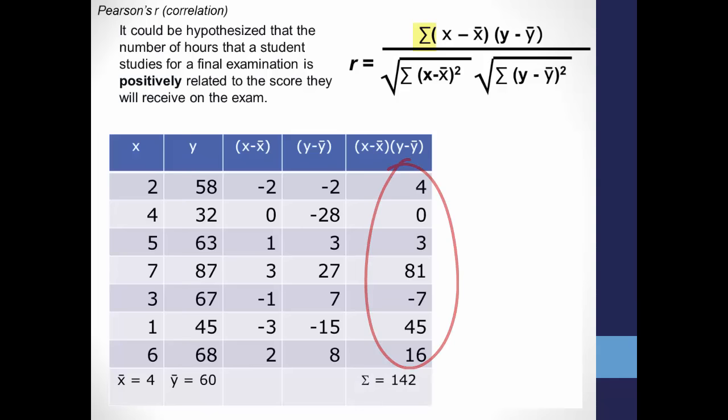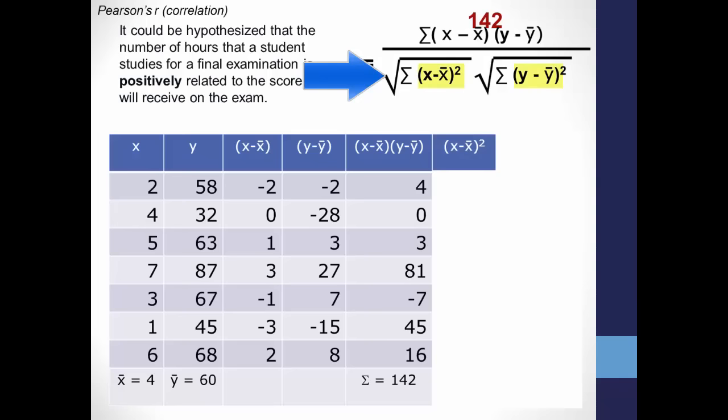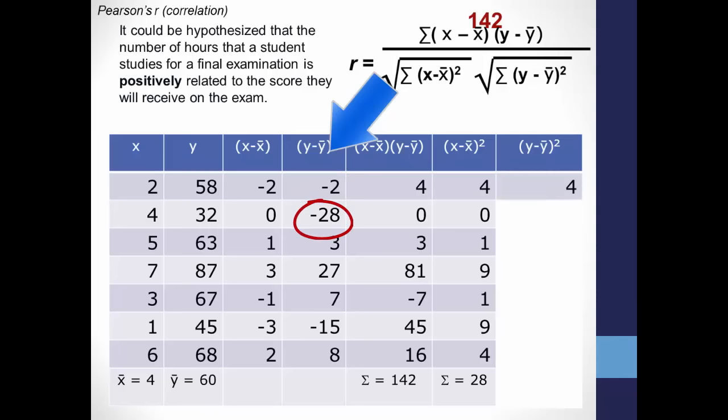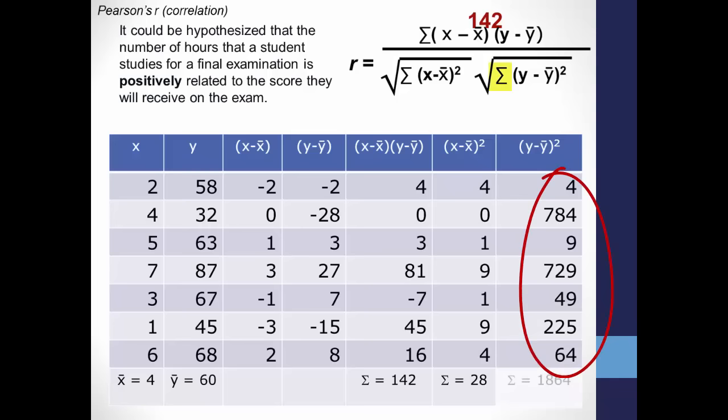142 is what goes into the numerator of this formula. Now onto the denominator, which tells you to square the result of each score minus the group mean. Negative 2 squared is 4. 0 squared is 0, and so on for the rest of the x scores. Sigma tells you to add all of these numbers together, giving us 28. You do the same for the y scores: negative 2 squared is 4, negative 28 squared is 784, and so on. Add them all together and you get 1864.